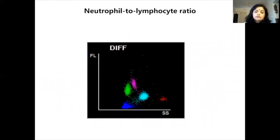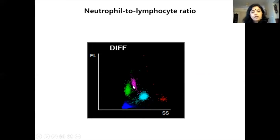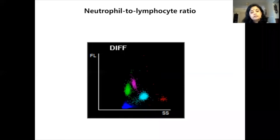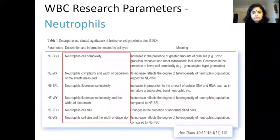Another specific parameter generated is the neutrophil-to-lymphocyte ratio. The lymphocytes and neutrophils split up and an exact ratio is given. This is an additional parameter used in investigation of the current pandemic, and a dedicated speaker will address it further.